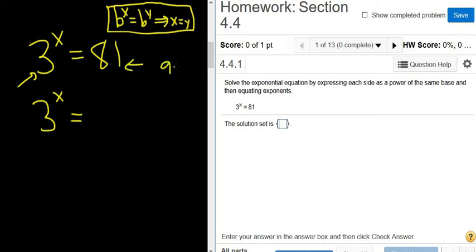So we know that 9 times 9 is equal to 81. And you can write 9 as 3 squared. And that's equal to 81. So when you multiply these, you add the exponents. 2 plus 2 is 4, so you get 3 to the 4th. So we can write 81 as 3 to the 4th power.